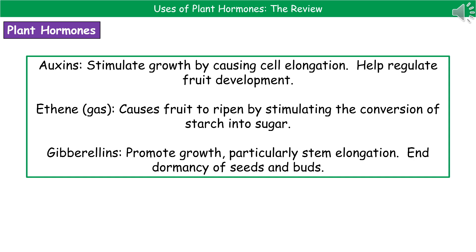Welcome to our review on the uses of plant hormones. As we've already seen in our previous video, we've got this key hormone that's involved in those different tropisms called auxin. The way that it actually interacts with the plant is by stimulating growth by causing that process of cell elongation.